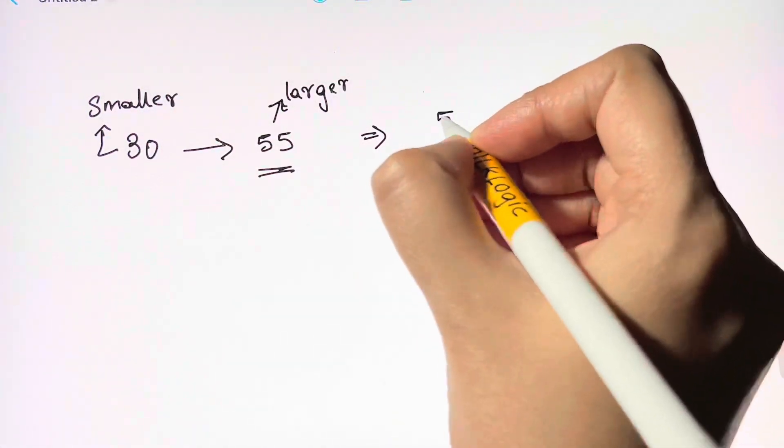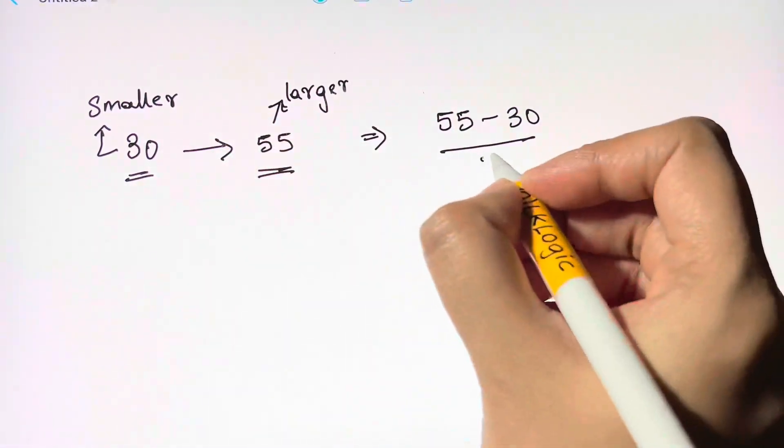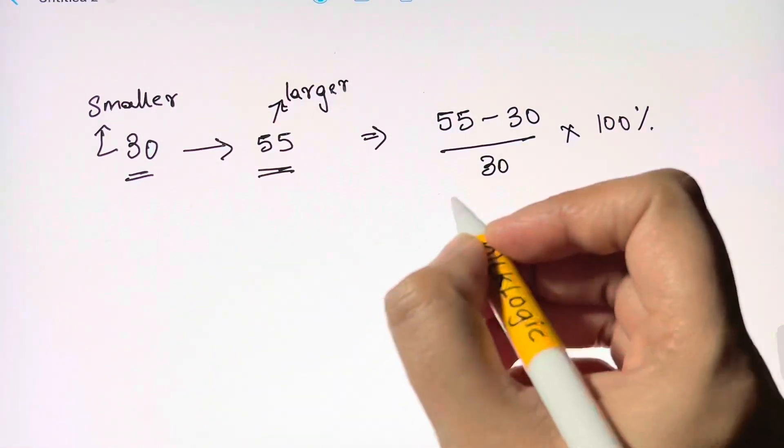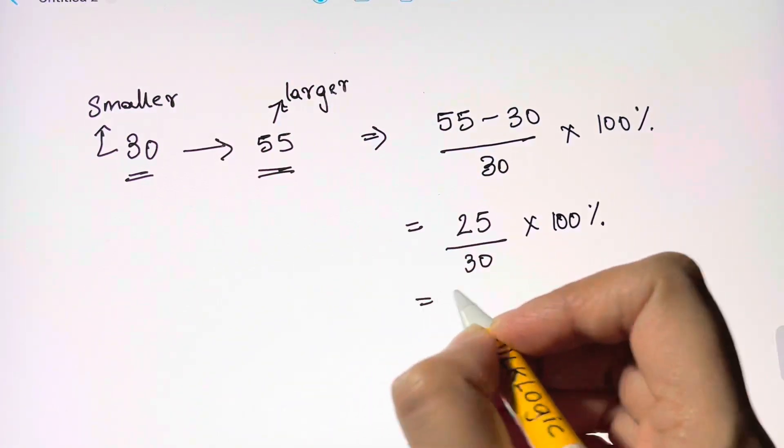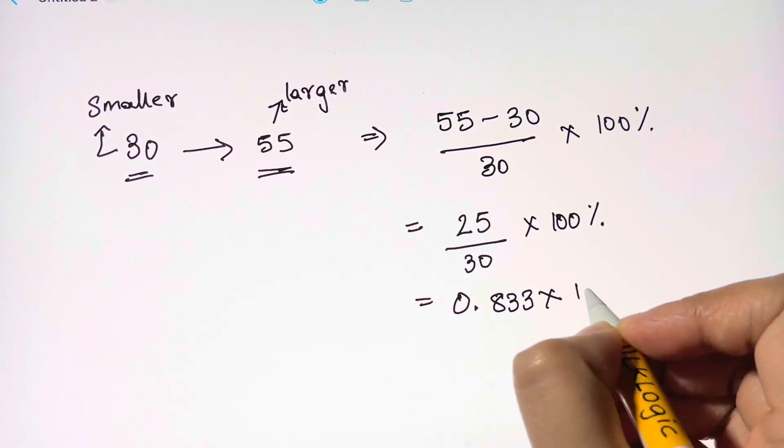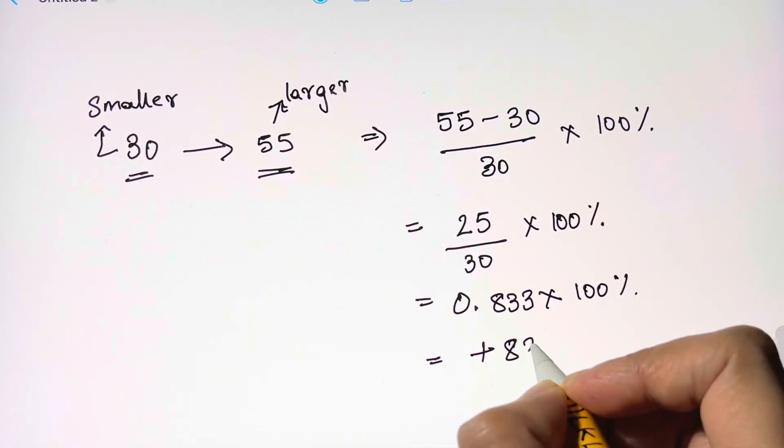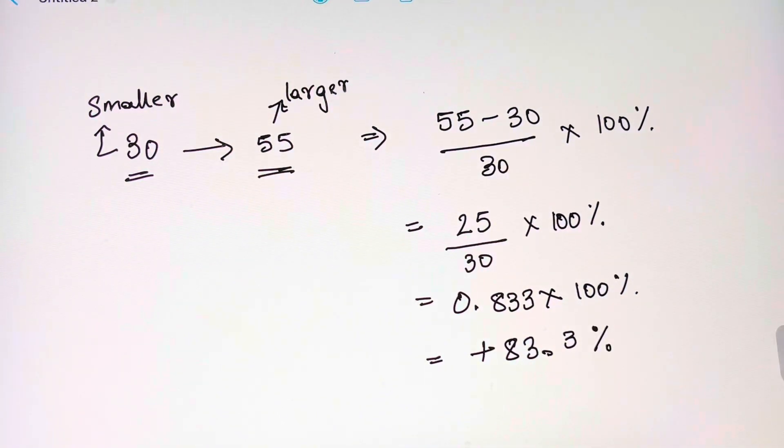Let's plug in the values: 55 minus 30 divided by 30 times 100 percent. So that's 25 over 30 times 100 percent, which is 0.833 times 100 percent. So we'll get 83.3 percent, which is plus, that means it's an increase.